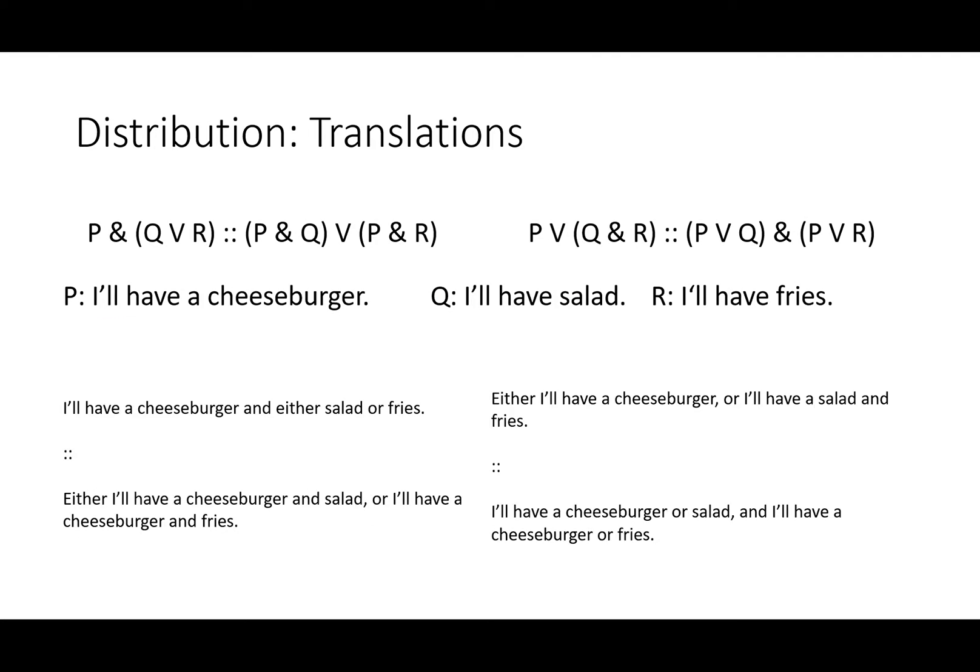Some translations can help us make sense of distribution. Imagine you go to a restaurant. Let P = 'I'll have a cheeseburger', Q = 'I'll have a salad', and R = 'I'll have fries'. The first rule of distribution says: 'I'll have a cheeseburger AND either salad or fries' is the same as saying 'either I'll have a cheeseburger and salad, or I'll have a cheeseburger and fries.' You might very well think both of these sentences in your head as you're deciding what side to get with your cheeseburger.